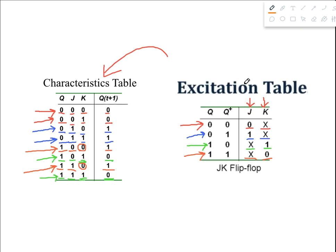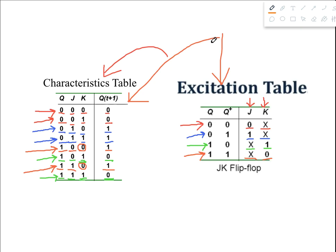You can clearly see that we can derive the excitation table using the characteristic table. This is it for all the tables regarding JK flip-flop. In the next tutorial we're going to show the tables of T flip-flop.